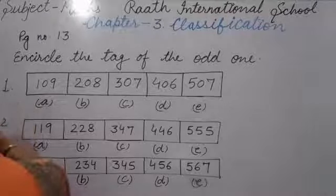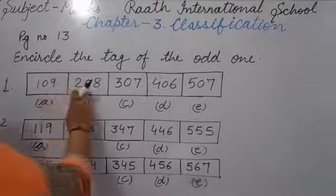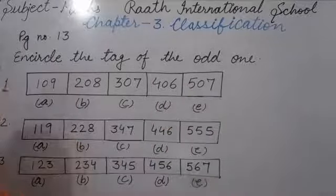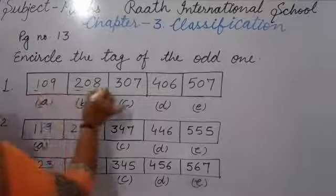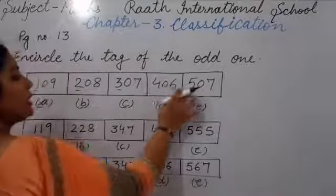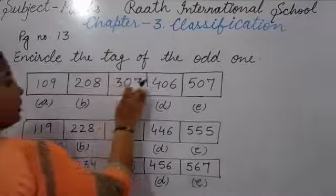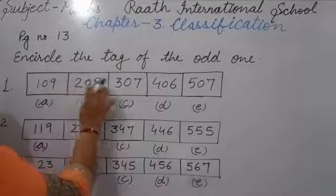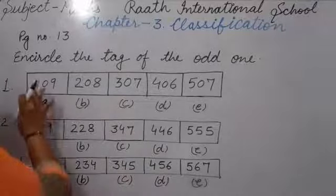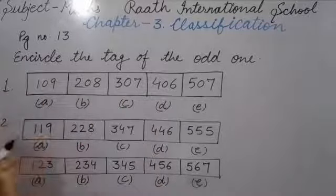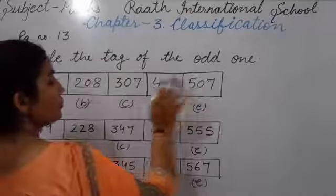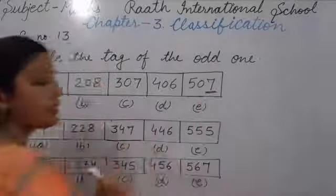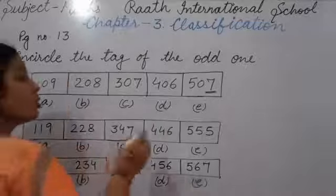So now page 13, first question: 109, 208, 307, 406, 507. You can see the hundreds column is increasing — 1, 2, 3, 4, 5 — that is correct. The tens column is all 0 — that is also correct. Now the ones column: 9, 8, 7, 6 — there will come 5. But there is given 7 in the last entry. So this is wrong and different. So we circle it.